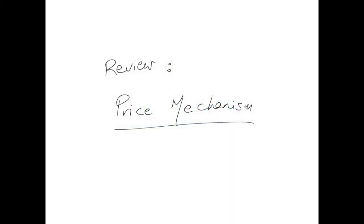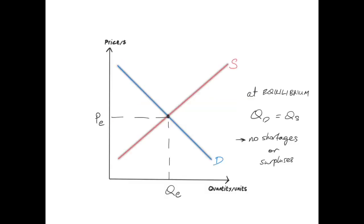Let's do a quick review of the price mechanism. Basically, in simple terms, the price mechanism is the system by which movements in prices work to bring a market back to equilibrium. You can see the demand curve here — the blue curve intersects the supply curve at the equilibrium point. At equilibrium, quantity demanded equals quantity supplied. There are no shortages or surpluses, and the equilibrium price is Pe and Qe.